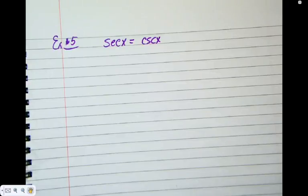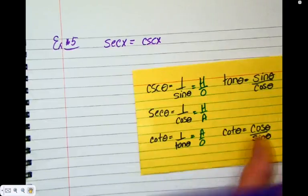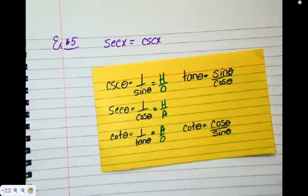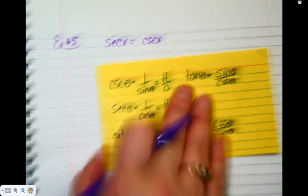Secant and co-secant. Okay, find me the formula that connects secant and co-secant. Yes, but does that link it to secant? So is there any one formula that links co-secant and secant? No. So we've got to try something else. So what do we know about secant? Which of these does have secant in it? One over cos. So let's try that and see what happens.